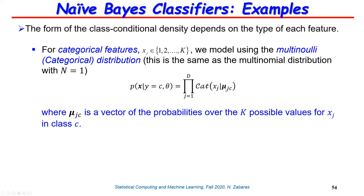For categorical features, instead of a single value mu_jc, I have a whole vector bold mu_jc. This vector defines the probabilities that when in class c and looking at feature j, the probability of taking any of the values 1 through K is represented by the components of this vector. Today we will train these models — mostly discrete cases, though real-valued features would be equally simple.